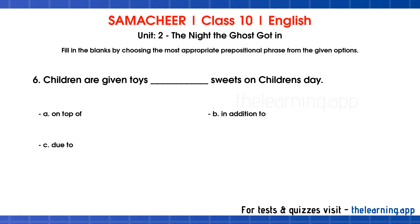Question 6: Children are given toys — sweets on Children's Day. Options are: a. On top of, b. In addition to, c. Due to. Correct answer is b. In addition to.